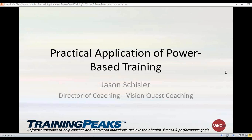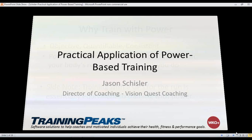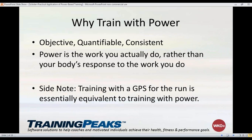We're going to start with why we want to use power in training. The things you always hear are that power is objective, quantifiable, and consistent. It's objective because you can take a power meter on your bike and it's going to be the same on Monday, Tuesday, a month from now, and a year from now for the most part. There's some little drift as units wear in and change over time, but for the most part you can count on the numbers from your power meter being accurate.